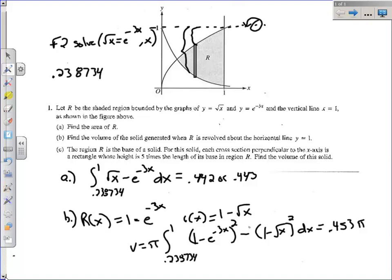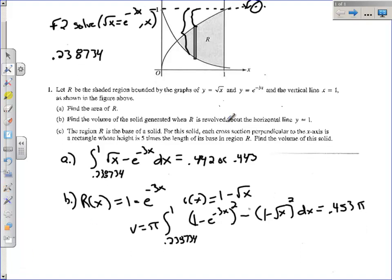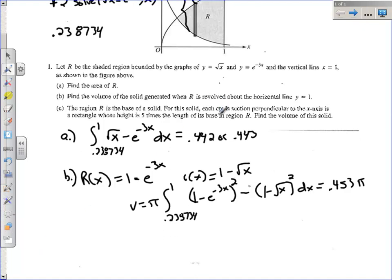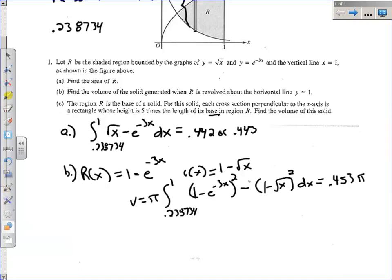Okay, last part is, imagine that this region is a base of a solid. So this cross section up here is the base of a solid. And for this solid, each cross section perpendicular to the x-axis is a rectangle, whose height is five times the length of the base in the region R. So the base of the rectangle is this part that's lying in region R. And the height is five times that length that's coming up off the page. So let's take a look at that rectangle.